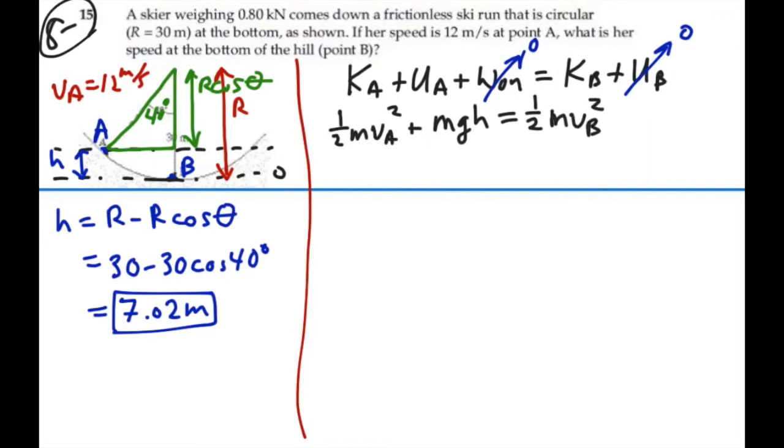And we want to find the velocity, the speed at the bottom of the hill, which is point B. Looking at this, we can eliminate mass because it's in each one of these terms.